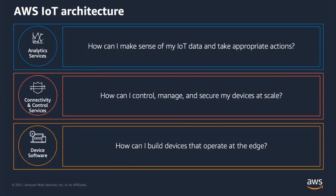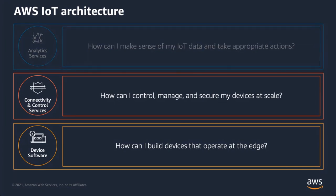On top of that, with millions of devices sending billions of messages, we have our analytics services — fully managed services that allow you to take data in, such as AWS IoT Analytics, a fully managed data pipeline to ingest, cleanse, transform, and make data available to downstream consumers without the heavy lifting of big data applications. In today's webinar, I'll focus predominantly on device software, AWS IoT Greengrass, and some connectivity aspects.